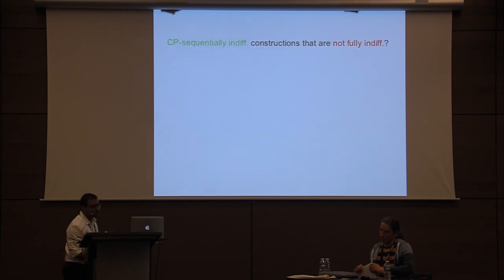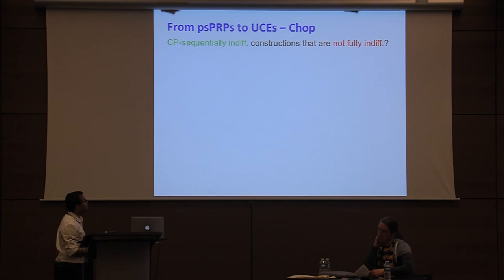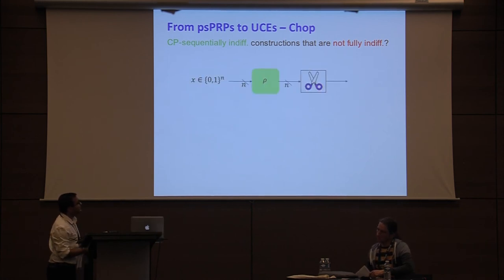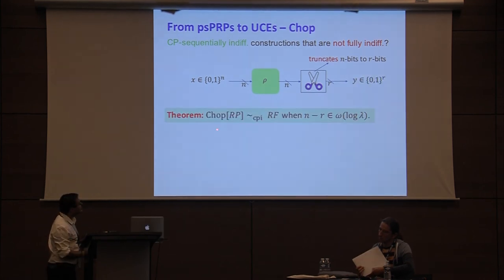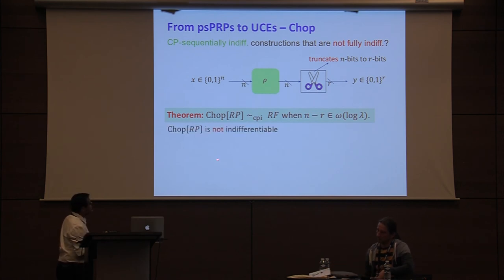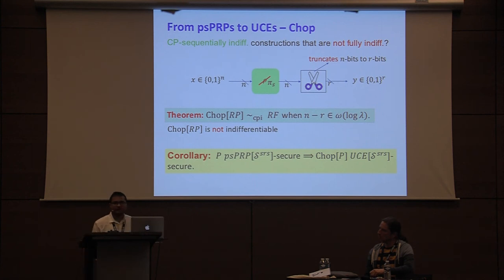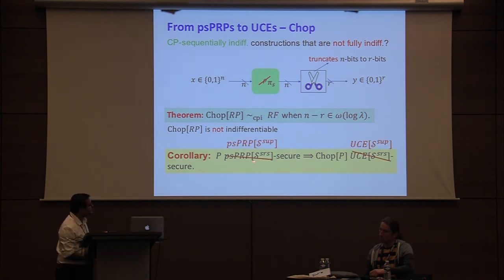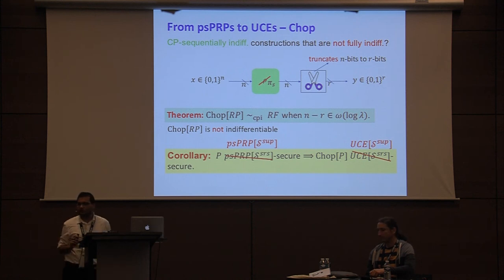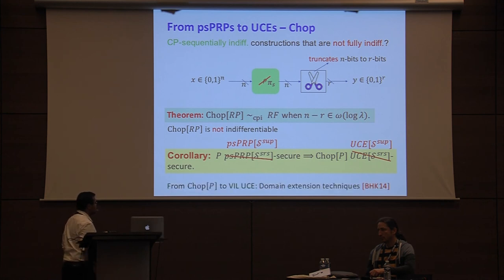Since we rely only on CP sequential indifferentiability, we ask if simpler constructions exist. We show there is a construction called chop, which takes an n-bit input, passes it through the permutation rho, and outputs an r-bit output. We show this construction is CP sequentially indifferentiable from a random function — though it is not fully indifferentiable. Instantiating rho with pi_S, a PSPRP, gives chop as a UCE for reset sources. Furthermore, this construction has a special property that allows us to get UCE for unpredictable sources from PSPRP for unpredictable sources, which is the weaker assumption. And that also suffices for many applications as shown by BHK. Chop is a fixed-input-length function; to get a variable-input-length UCE one can use domain extension techniques from previous work.